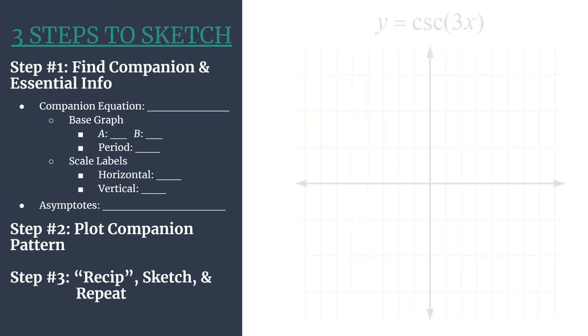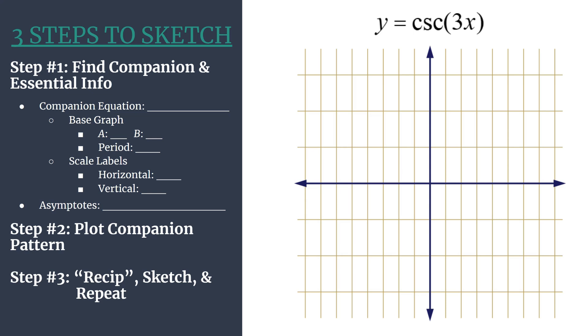Here's our template and grid with our equation. We notice that this equation is in the general form for an unshifted cosecant equation, y equals a cosecant bx. We see no shifting going on, so we can use this basic template.